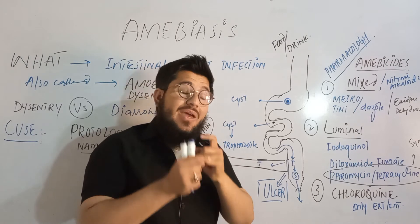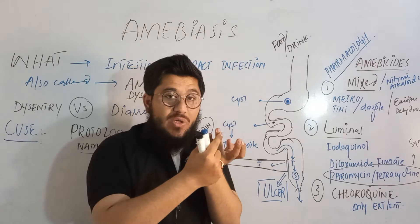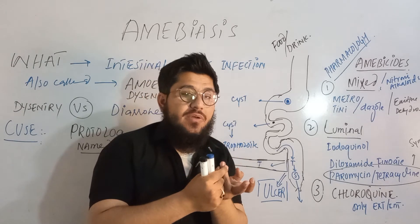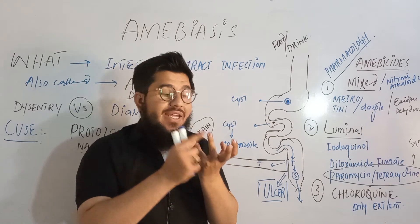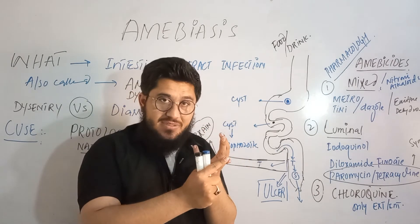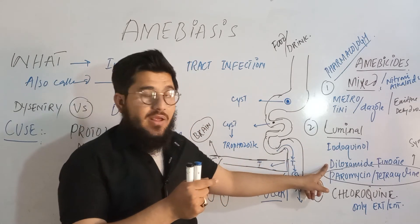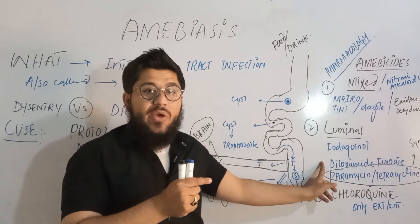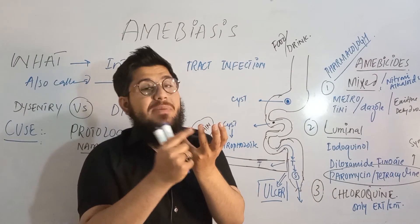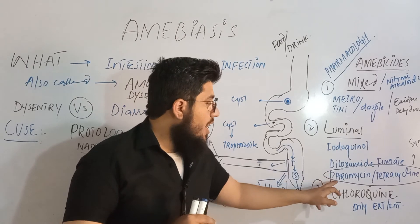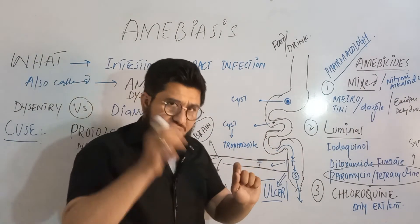Once the protozoan enters the body and converts from cyst to trophozoite in the intestine, trophozoites and bacteria exist together in a symbiotic condition. To disrupt this symbiosis, antibiotics (paromomycin and tetracycline) are used alongside iodoquinol and diloxanide furoate. Iodoquinol and diloxanide furoate destroy the trophozoite, while paromomycin and tetracycline destroy the bacteria that were supporting the trophozoite.